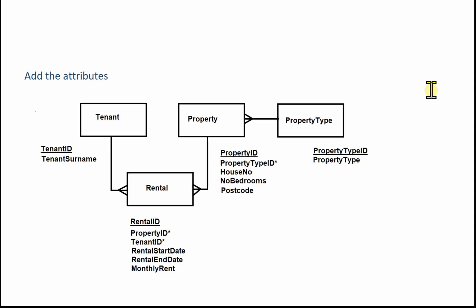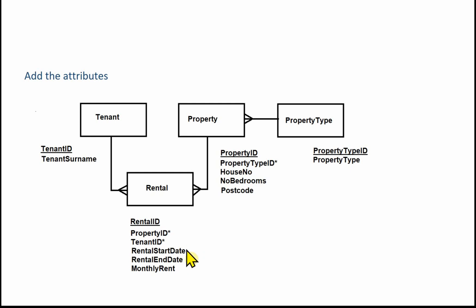The final stage of the design is to add the attributes. It's a case of going through all those column headings and deciding which entity they belong to. Property type — as in detached house, bungalow — belongs with property type ID. For the property entity, each property has a house number, a number of bedrooms, and a postcode. For tenant, all we had was the tenant's surname. For rental, other than the foreign keys, each rental had a start date, an end date, and a monthly rent. So that completes the design. You can just sketch these out — you don't have to do them neatly. If you're doing an exam you can literally just sketch it out; you don't have to hand in any evidence of your design. Next video we'll look at creating the table structures.